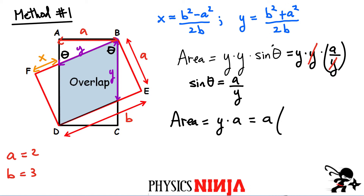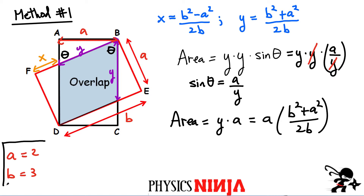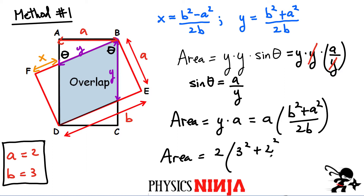Substituting into the area formula: y × y × (a/y). One of the y terms cancels, leaving the final expression: Area = a × y. Substituting y = (b² + a²) / 2b, our general formula is a(b² + a²) / 2b. For the specific case a = 2 and b = 3, we get 2 × (9 + 4) / 6 = 2 × 13/6 = 13/3.